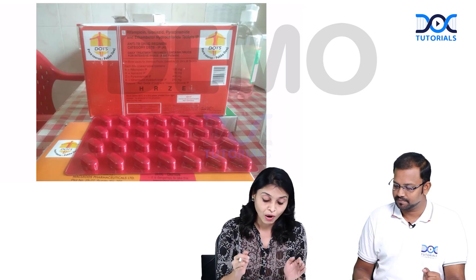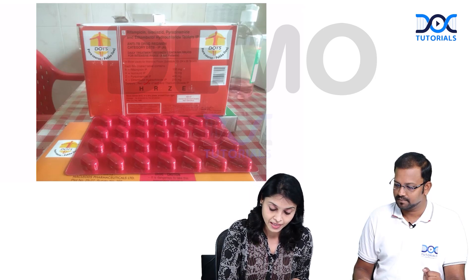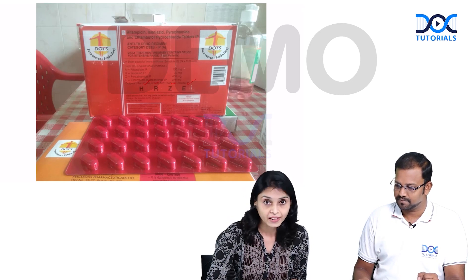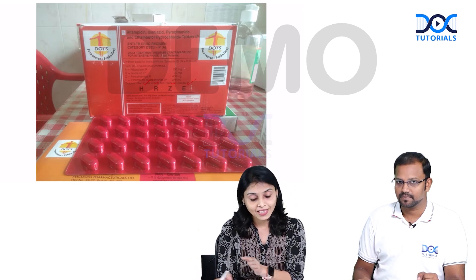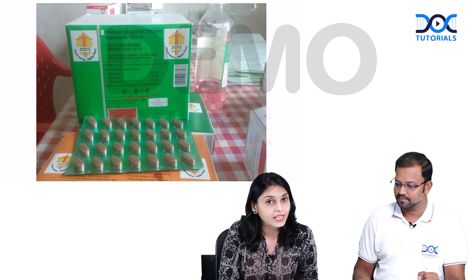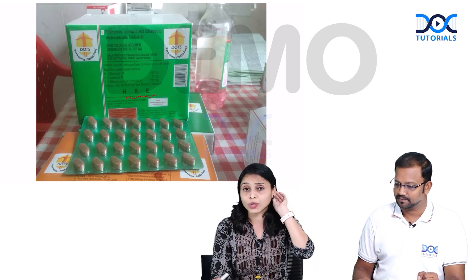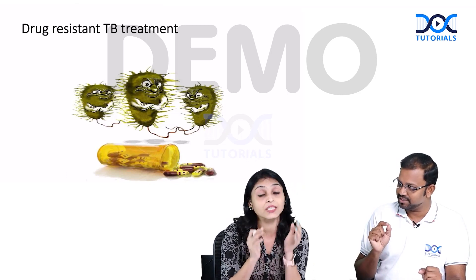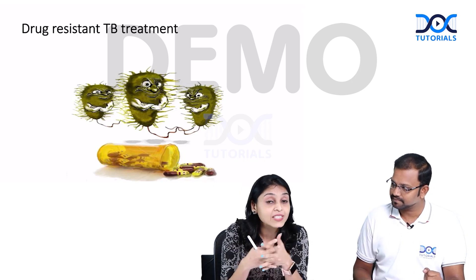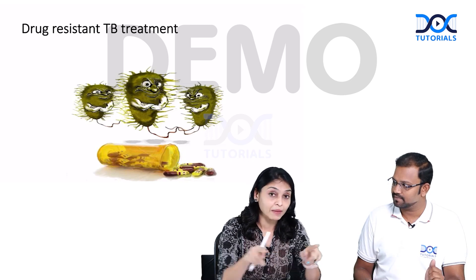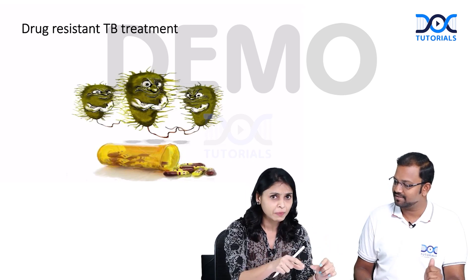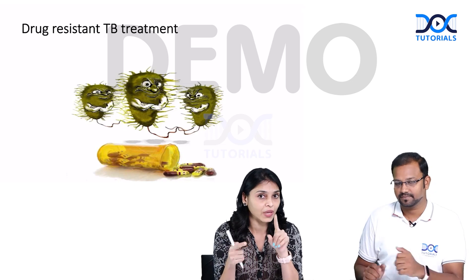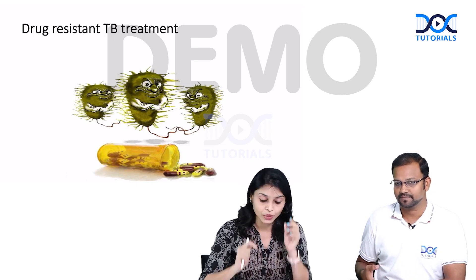What you see here is the drug box — H is there, R is there, Z is there, E is there. So this is the intensive phase given for first-line therapy, and it is red in colour. We have another colour, which is green, given for HRE — that is for the continuation phase. Earlier, we were getting multi-blister packets in which H, R, and E were kept separate. Now all these are combined into one single fixed drug combination tablet.